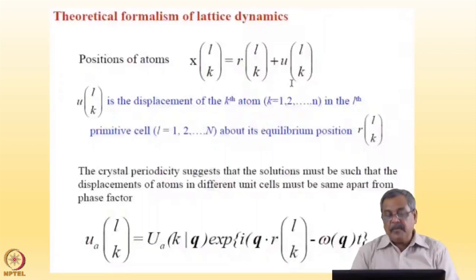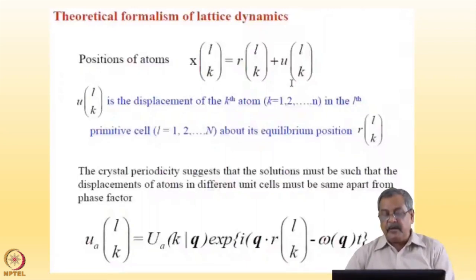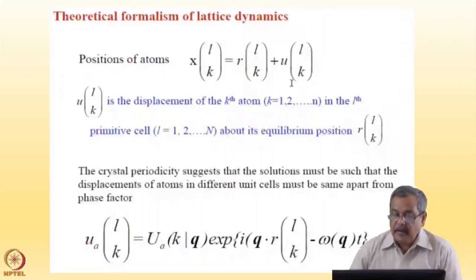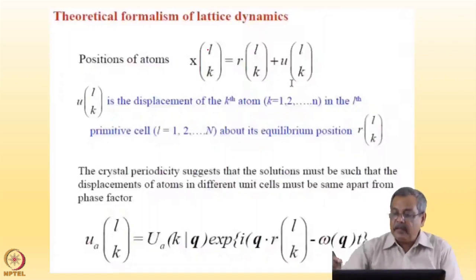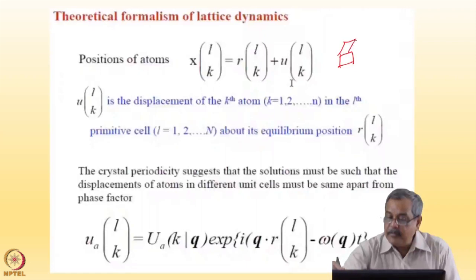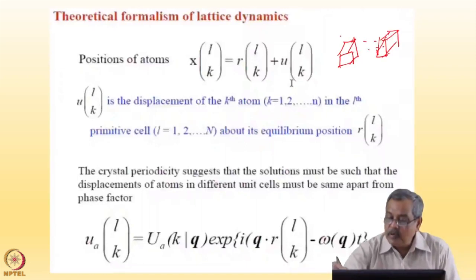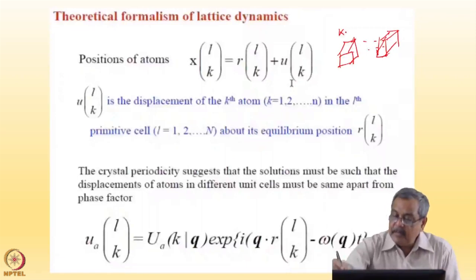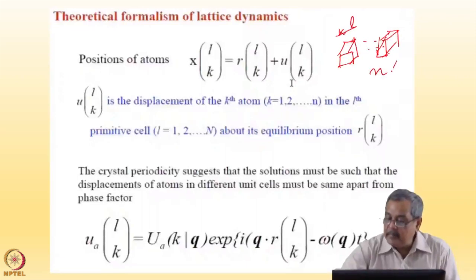With this I start. First, let me write down: there is something called a dynamical matrix. The positions of atoms — the formalism is that I write x when I say the k-th atom in the l-th unit cell. That means there are unit cells after unit cells in the solid, and I am talking about the k-th atom in the l-th unit cell if there are n atoms per unit cell.